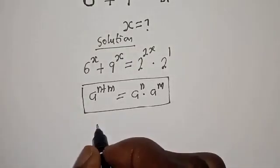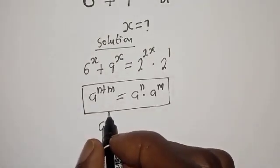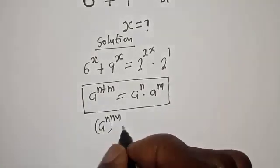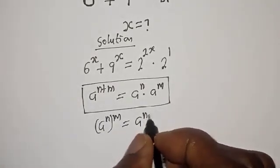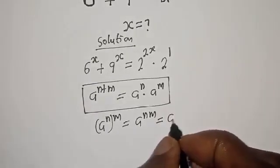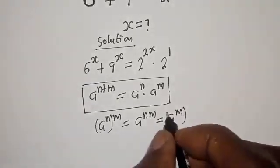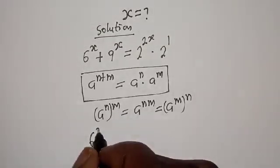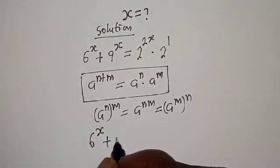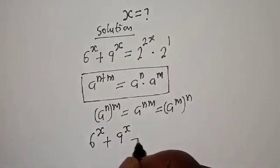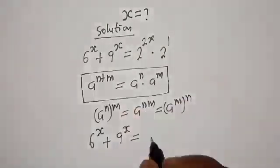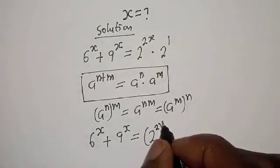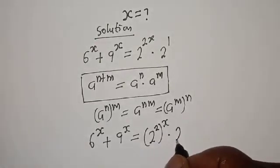Also, if you have a raised to power n to the power m, this is equal to a raised to power n times m, which also equals a raised to power m to the power of n. Then we have 6 raised to power s plus 9 raised to power s equal to 2 raised to power 2, to the power of s, multiplied by 2.